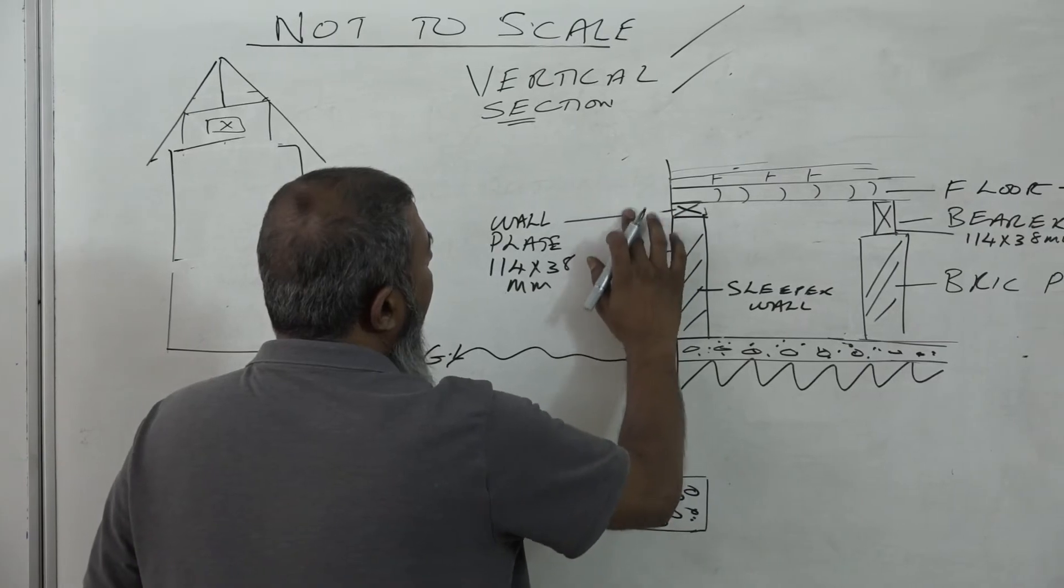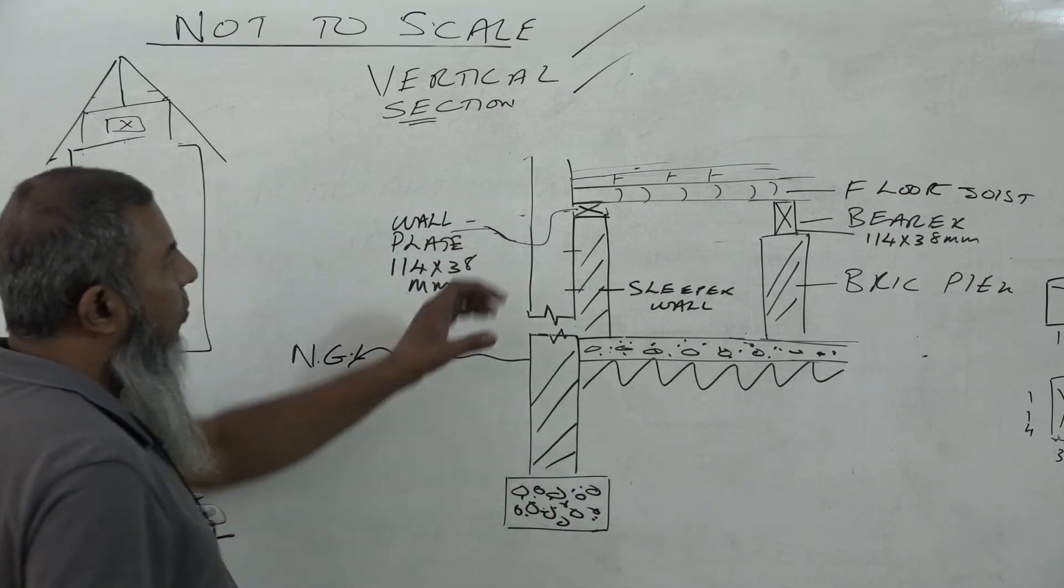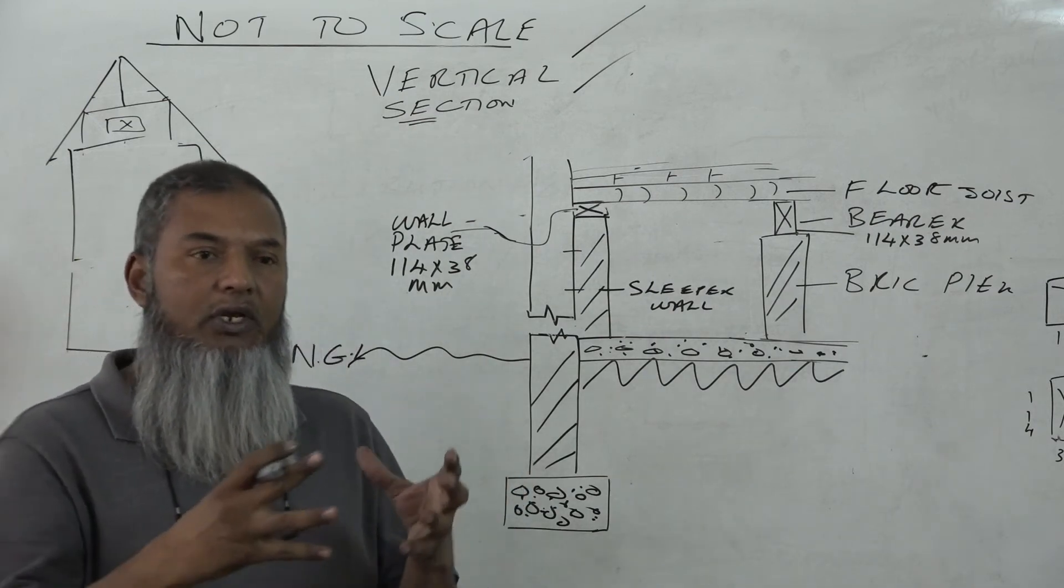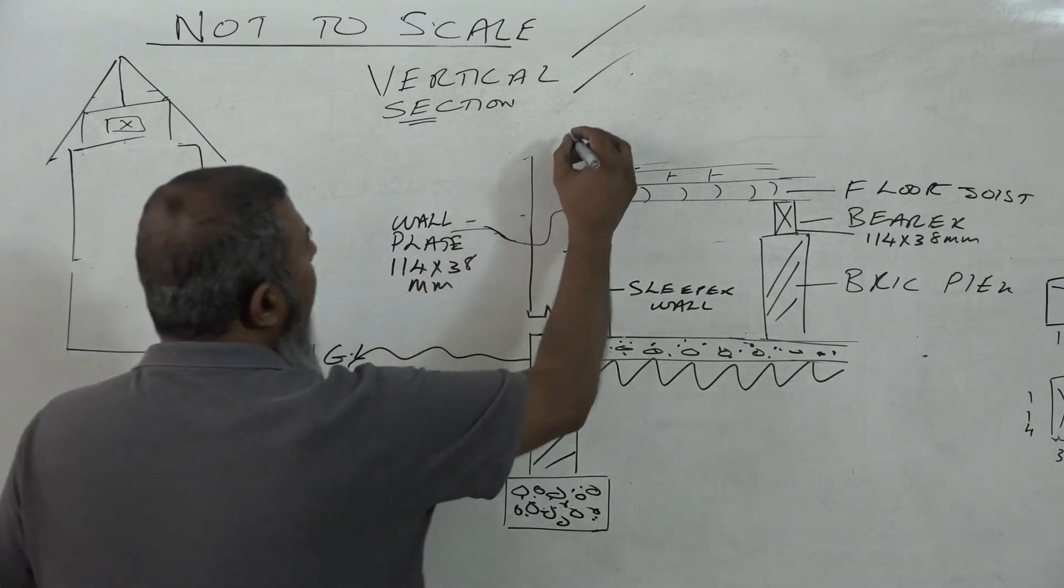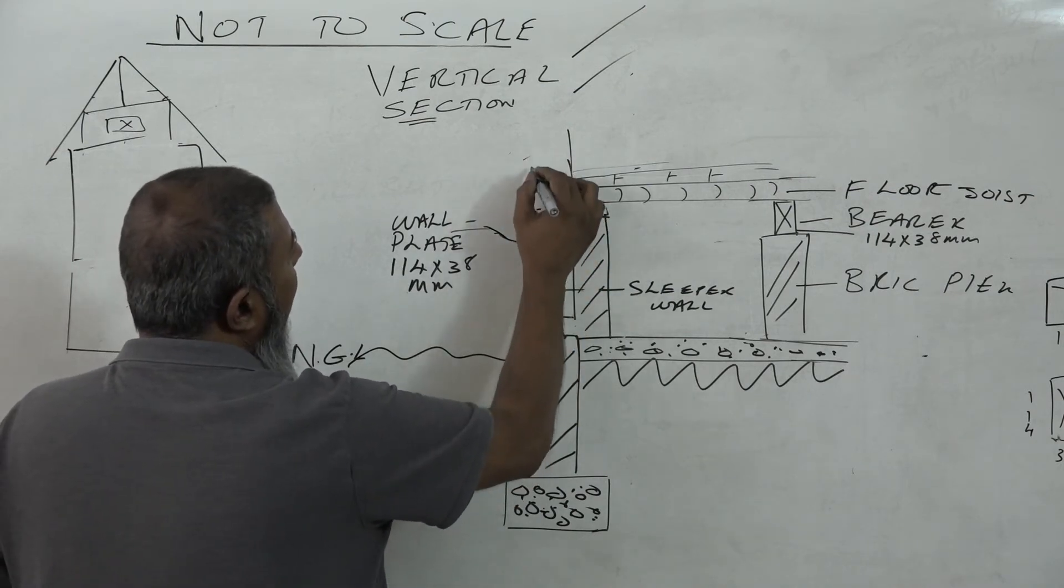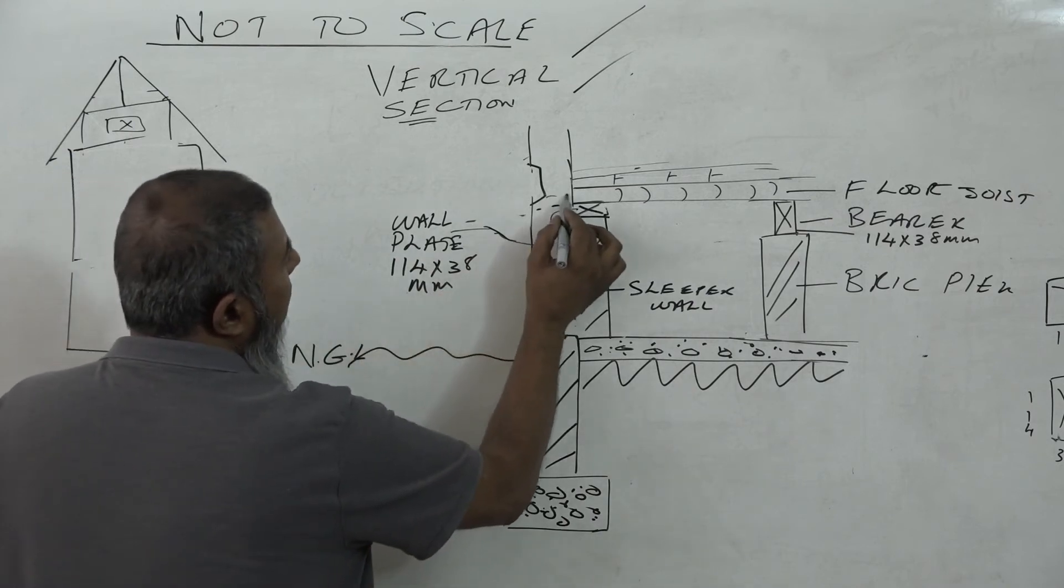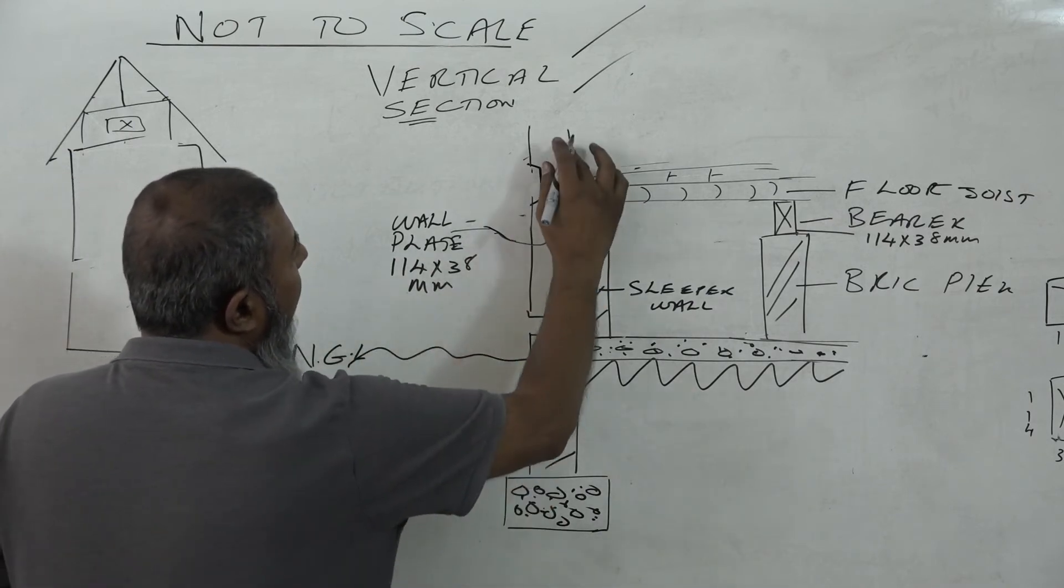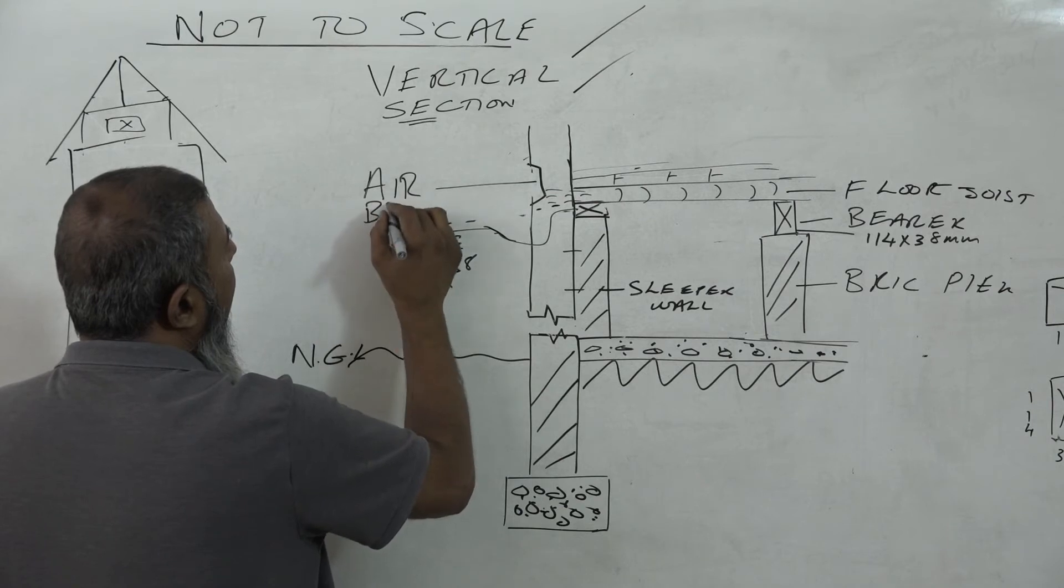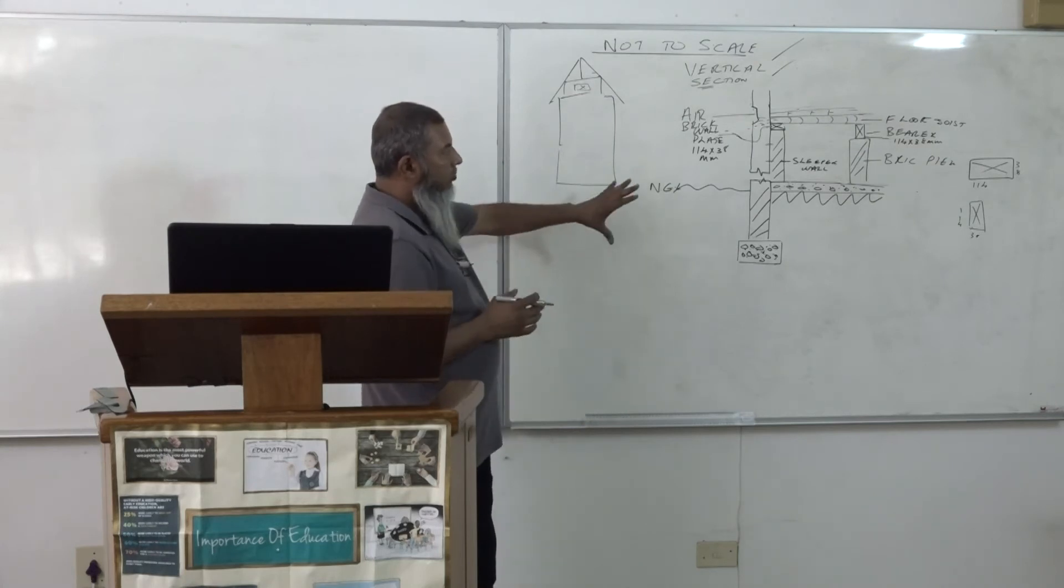Now remember, we said that we need to allow for ventilation here, because wood in moisture, it rots. When wood attracts moisture, it rots. So what we do here on the outside, we place what is called an air brick. So when they are building, when a wooden floor comes in, we replace it with an air brick. The wall going up, that's an air brick. So air flows into the room. On the inside, we have an air vent. So that is what a wooden floor looks like.